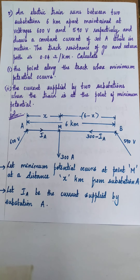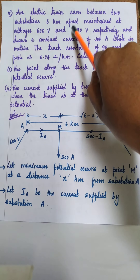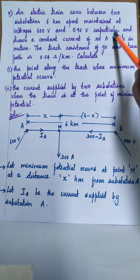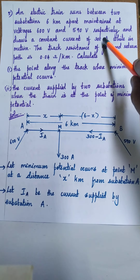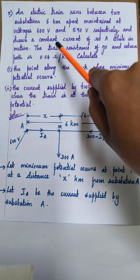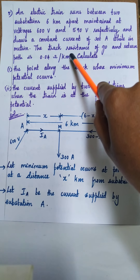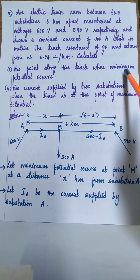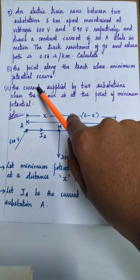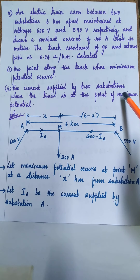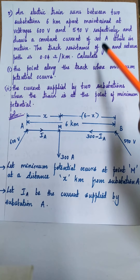Problem number five: an electric train runs between two substations six kilometers apart, maintained at voltages 600 volts and 590 volts respectively. It draws a constant current of 300 amperes while in motion. The track resistance of the go and return path is 0.04 ohm per kilometer. Calculate the point along the track where the minimum potential occurs, and the current supplied by the two substations when the train is at that point.